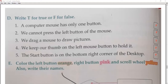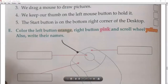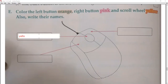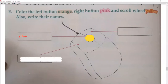Next question: color the left button orange and the scroll wheel yellow. The scroll wheel will be colored yellow, and the left button will be colored orange.